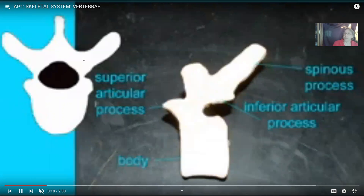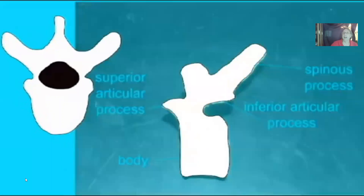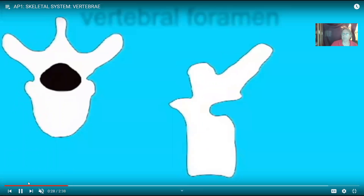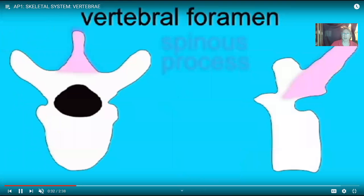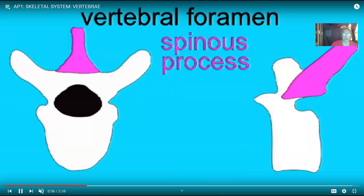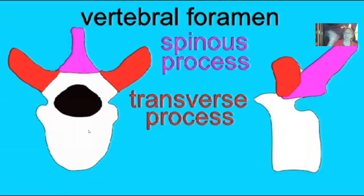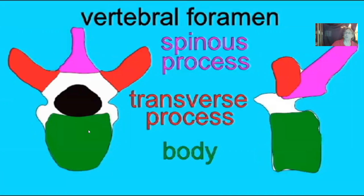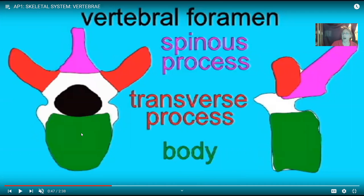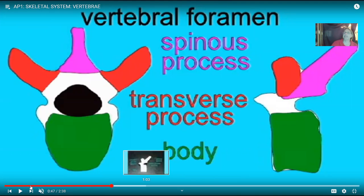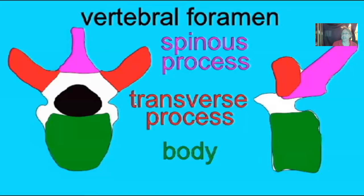Muscles attach to the vertebrae, so we see processes such as the single spinous process, which is longest in the thoracic vertebrae, and the transverse processes going out to the two lateral sides. If you were studying muscle attachments — for example, the trapezius or latissimus dorsi — you would learn about where they attach to the spinous processes. All vertebrae except the very first one, the atlas, possess a body.